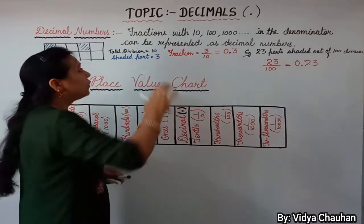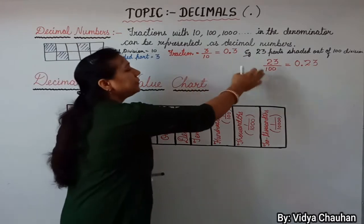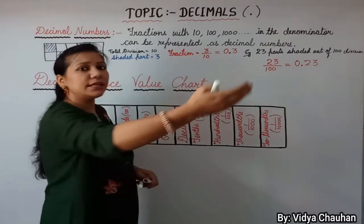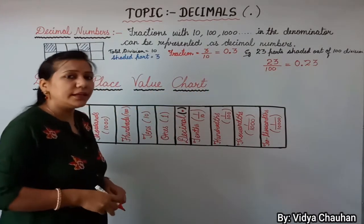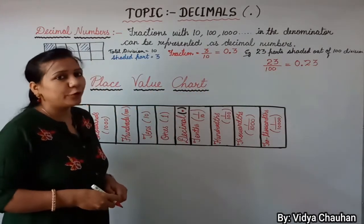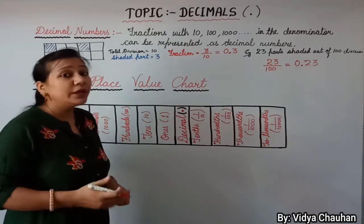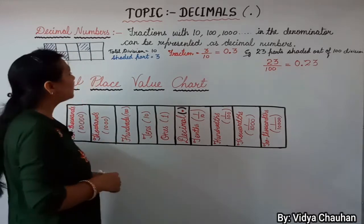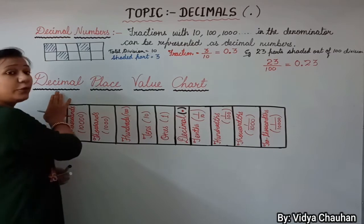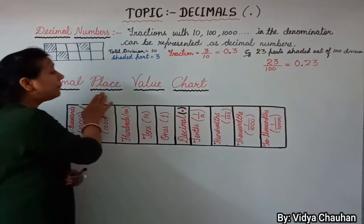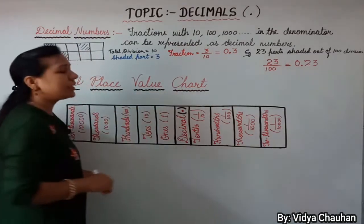The decimal form for 23 upon 100 is 0.23. This is how we can express any fraction number whose denominator is ten, hundred, thousand, ten thousand, or one lakh in decimal form.